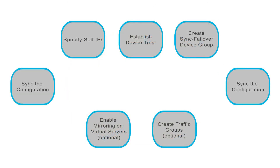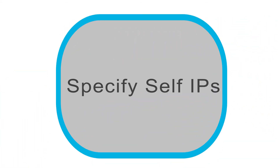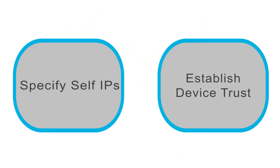Here's a flowchart that shows the sequence of steps required to implement DSC. First, on each device you must tell the BigIP system which self-IP addresses the other devices should use to sync their configurations, communicate about failover, and mirror their connections. Next, you must have the devices exchange their device certificates to ensure that they trust one another.